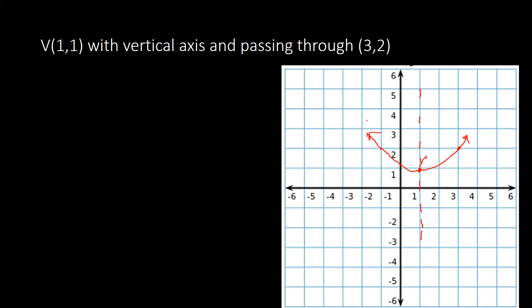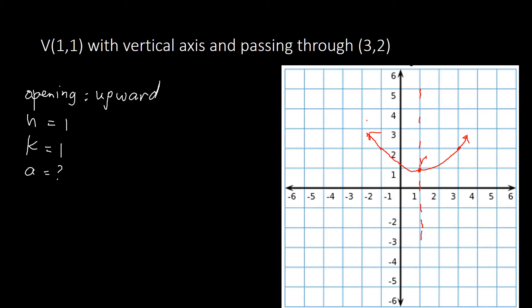Based on the graph, the opening is upward. Our H and K come from the vertex: H is 1 and K is 1. We don't have A yet, so A is unknown.